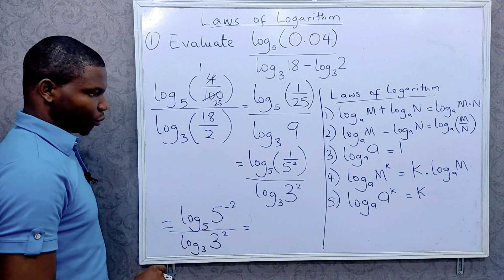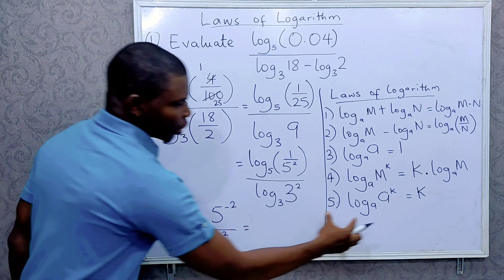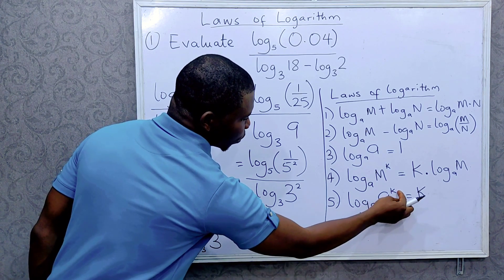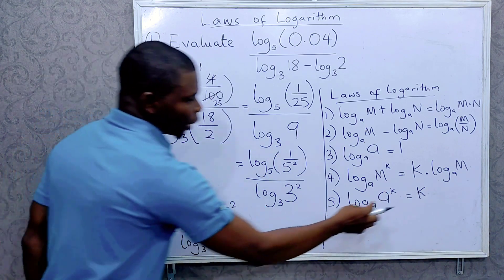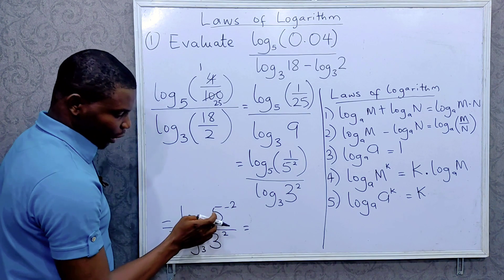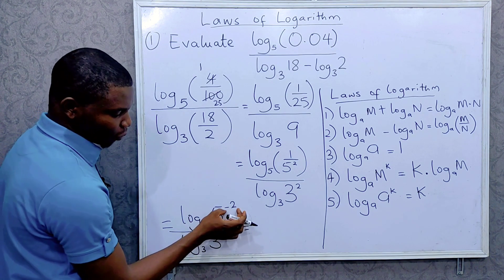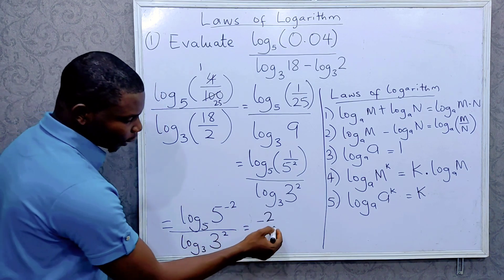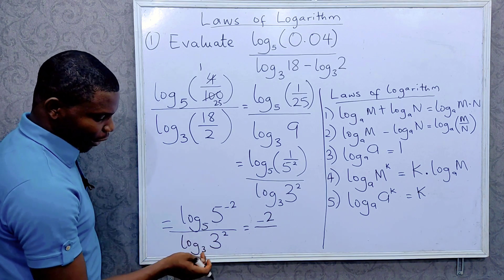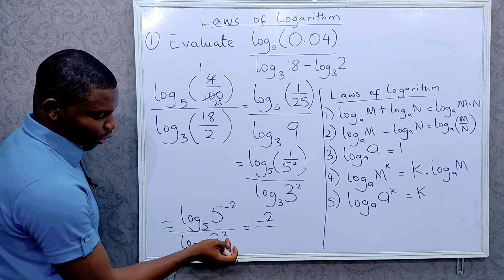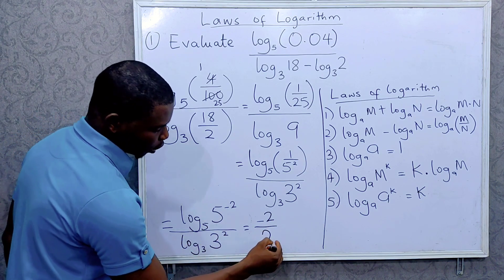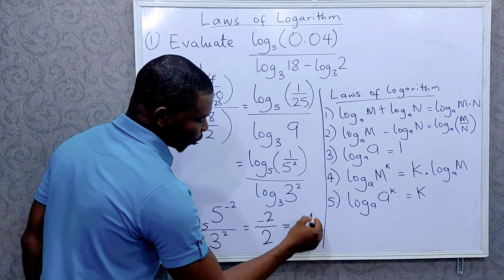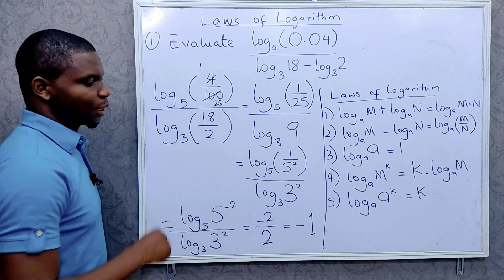Now what law do we apply here? We can see the fifth law, where the argument and the base are the same but the argument is raised to a power. So log base 5 of 5 to the minus 2 is simply equal to minus 2. Similarly, log base 3 of 3 squared equals 2. So we have minus 2 divided by 2, which equals minus 1. Our answer is minus 1.